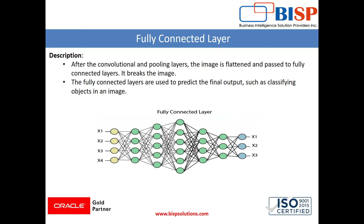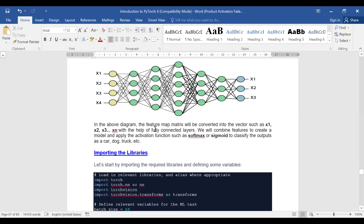The fully connected layer comes after the convolutional and pooling layers. The images are flattened and passed to the fully connected layer, breaking the image into a series. The feature map matrix is converted into vectors such as x1, x2, x3 up to xn. The fully connected layer is used to predict the final output, such as classifying objects in an image. We combine features to create a model and apply activation functions such as softmax and sigmoid. We have already covered sigmoid in a previous video.